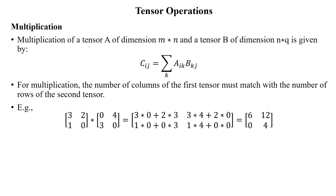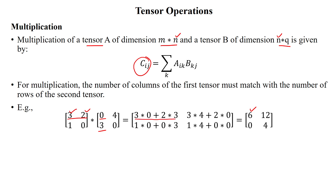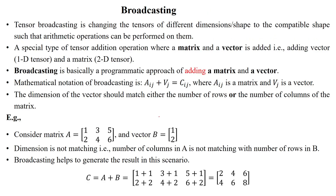Next is multiplication. For multiplying two tensors, we have to check the dimensions of the first matrix and second matrix. The number of columns in the first matrix should match the number of rows in the second matrix. Here we verify that condition is satisfied, so we can perform the multiplication. The result is stored in tensor C, giving values 6, 12, 0, 4. For each position, we perform the sum of the products of the corresponding rows and columns.